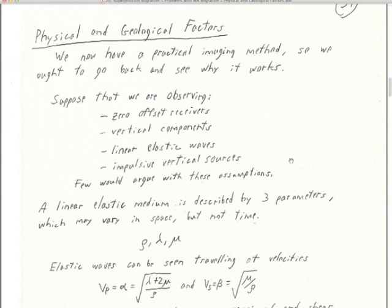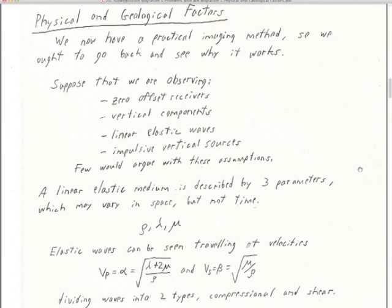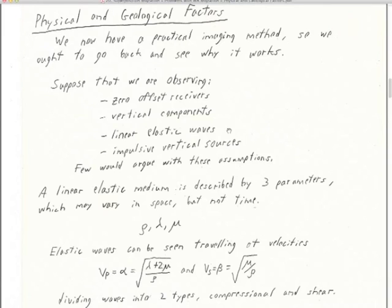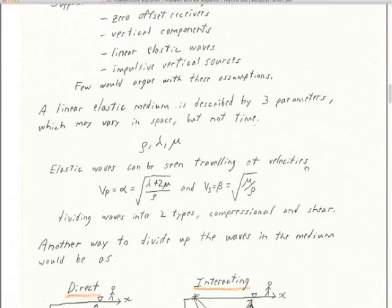So we have some practical imaging methods, and I want to go back and see why these imaging methods — especially the summation migration, which is so simple — why do they work at all? We've got this set of assumptions: zero offset receivers, sources and receivers are coincident, a certain kind of survey like a chirp survey. We're looking at vertical component data, linear elastic waves — we'll have P waves, S waves, and surface waves — and we also have impulsive vertical sources, like hammering on the ground. We can do a lot of useful surveys under those conditions.